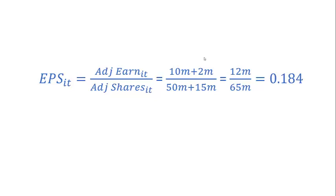The number of shares on issue is going to go up by 15 million. So to calculate our diluted earnings per share number, we have adjusted earnings of $12 million and an adjusted number of shares of 65 million. That gives us a diluted earnings per share number of $0.184, which is less than the $0.20 we had as our basic earnings per share number. You can see how this is a dilutive security.